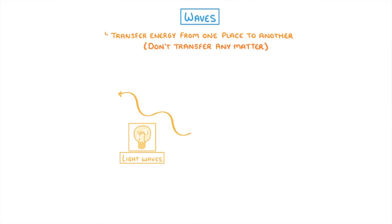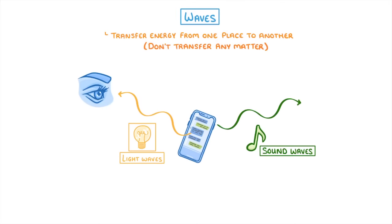The first thing to understand about waves is that they transfer energy from one place to another, but they don't transfer any matter. So when light waves pass from a phone screen to your eye, or sound waves pass from the speakers to your ear, only energy is being transferred.